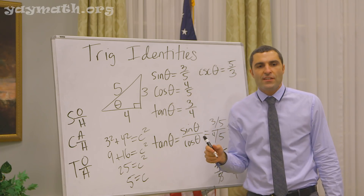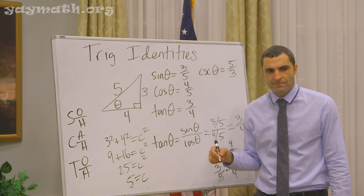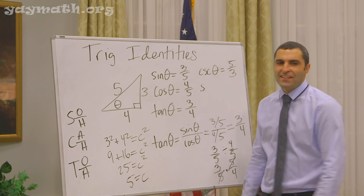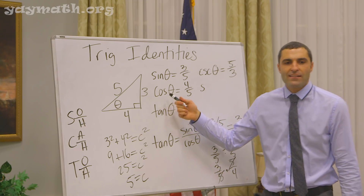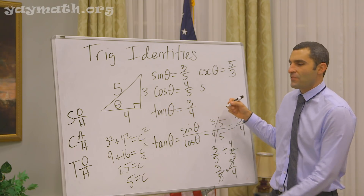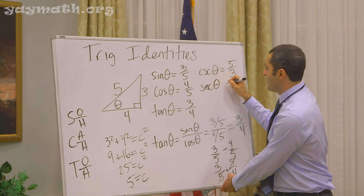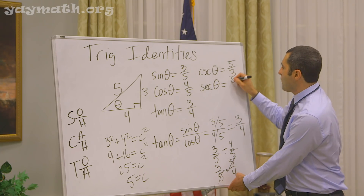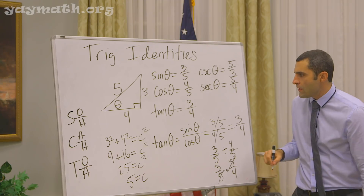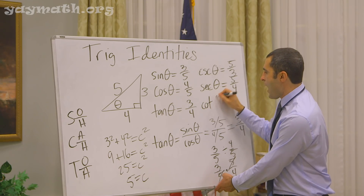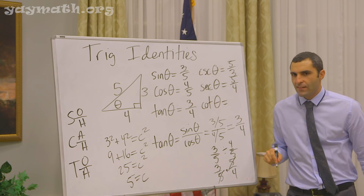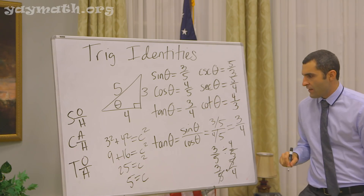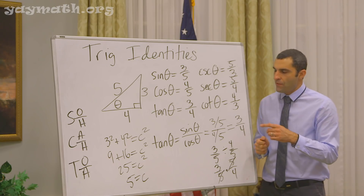And the reciprocal of cosine — it's a division in college sports. Secant, it's called. So it's 5 over 4. And then cotangent — the reciprocal of tangent — is 4 over 3.